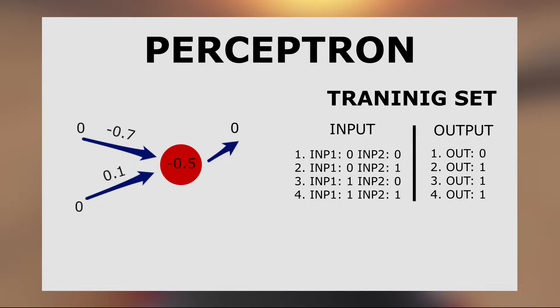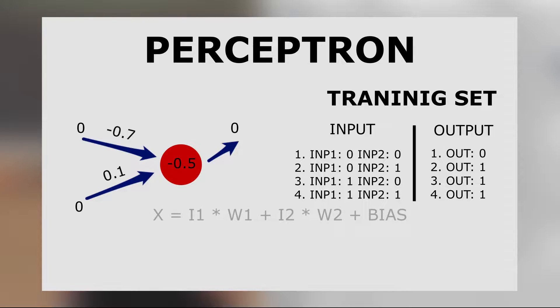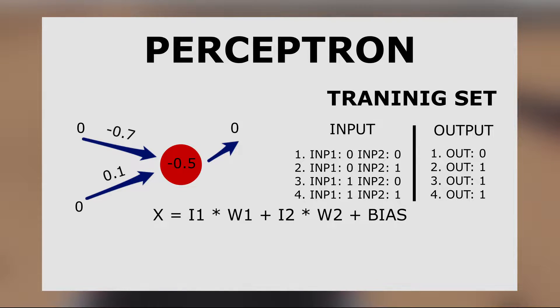The calculation each neuron in a network conducts is as follows. Every input value is multiplied by corresponding weight value. Next, those results of multiplications are added together with the bias values.